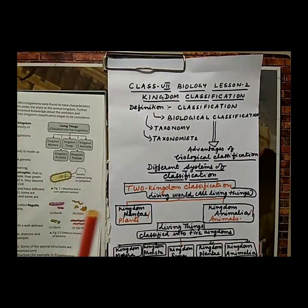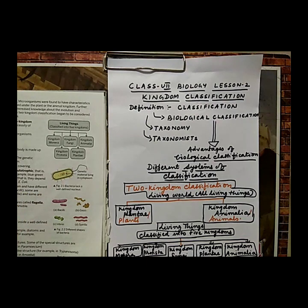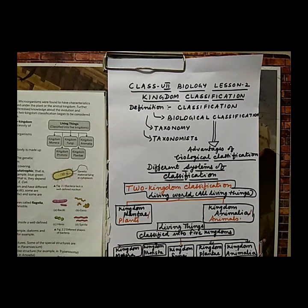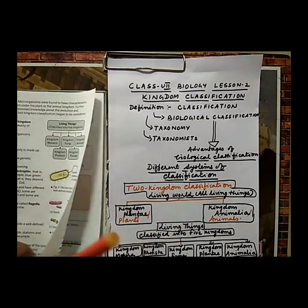The second category is kingdom Protista. Protists are unicellular and eukaryotic in nature, so they have a well-defined nucleus. A few organisms are autotrophic, but the majority are heterotrophic. They move with the help of special structures in their body. Examples include diatoms, Euglena, Paramecium, and Amoeba. Diatoms and Euglena are autotrophic, while Paramecium and Amoeba are heterotrophic. Locomotory organs such as flagella, pseudopodia, and cilia are present in this group.